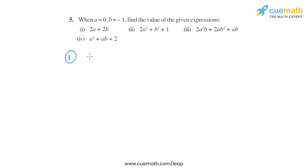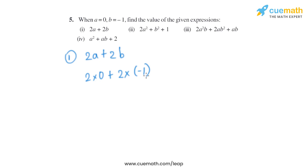In the first part, the expression given is 2a + 2b. As we know that a is 0, it will become 2 into 0, plus b is minus 1, so it will become 2 into minus 1. So 2 into 0 is 0, and 2 into minus 1 is minus 2.